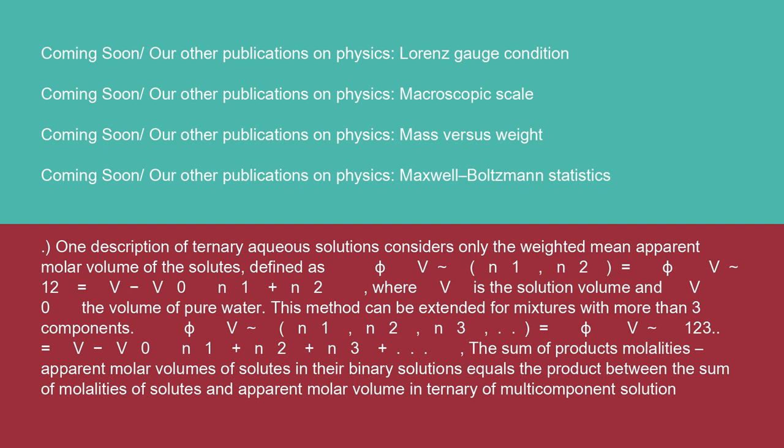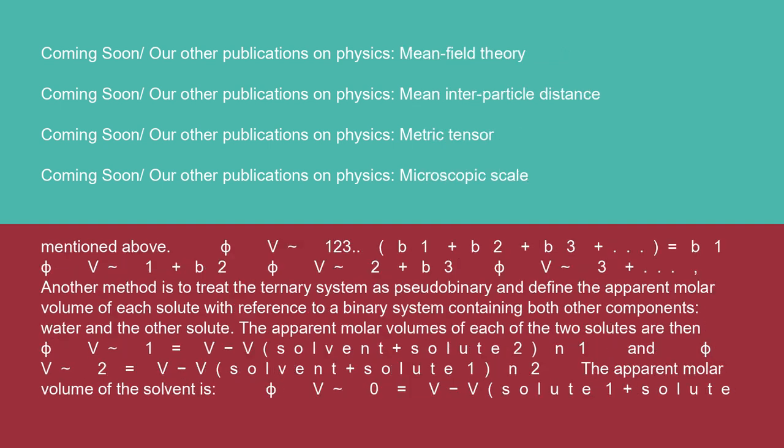This method can be extended for mixtures with more than three components: φV(N₁,N₂,N₃,...) = φV₁₂₃ = (V - V⁰)/(N₁ + N₂ + N₃ + ...). The sum of products of molalities and apparent molar volumes of solutes in their binary solutions equals the product between the sum of molalities and apparent molar volume in the ternary or multi-component solution: φV₁₂₃(B₁ + B₂ + B₃ + ...) = B₁·φV₁ + B₂·φV₂ + B₃·φV₃ + ...